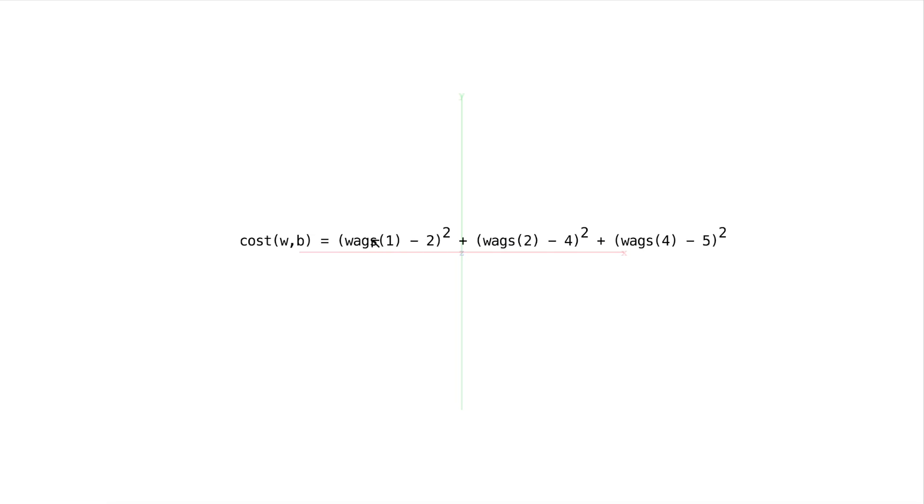So we have our model's prediction, and we subtract what it should have been, and then when we square this difference we get a number that gets larger the further our model's prediction is from what it should be. So this makes sense to use in our cost function, and we do this for every point because we're trying to fit that line to the data as best as we can.